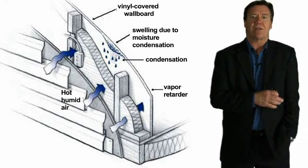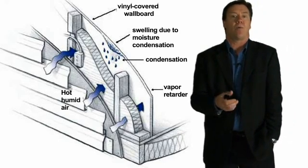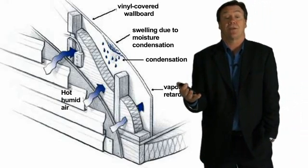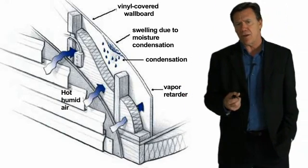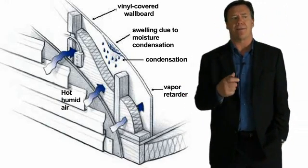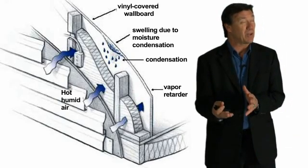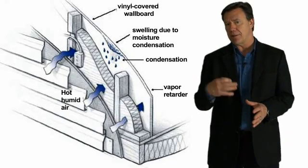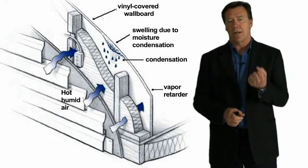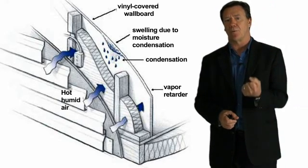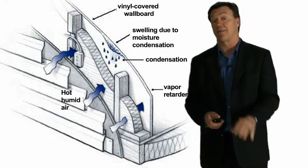Here's an example: if warm moist air infiltrates through the wall system and hits the back of the drywall, and the home is being cooled in the summer months, you can actually get condensation. That's another reason why the building codes have lightened up a bit on the vapor retarder requirements in hot and humid climates — because you don't want that vapor retarder to be a place where moisture can condense if the home is under a negative pressure.